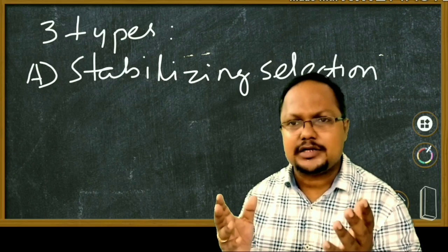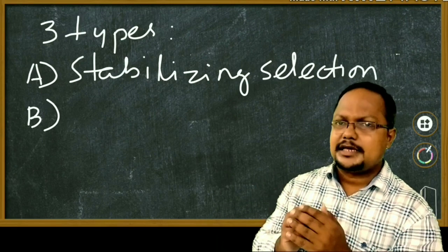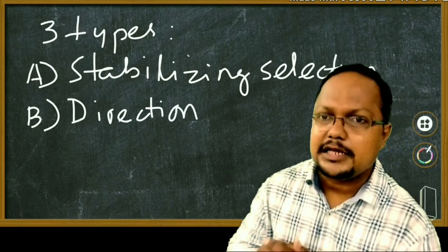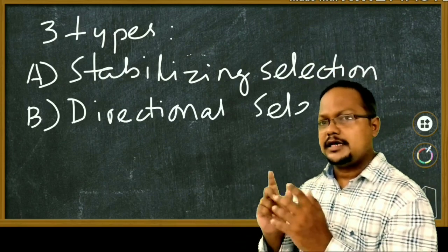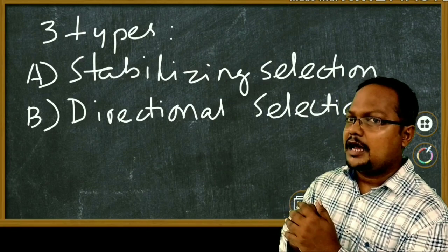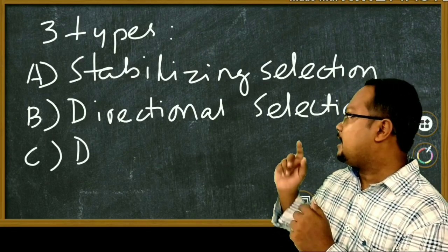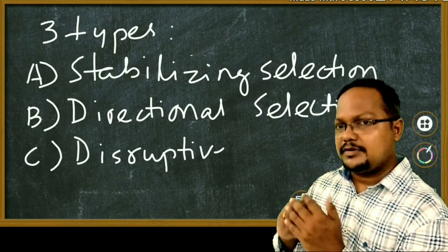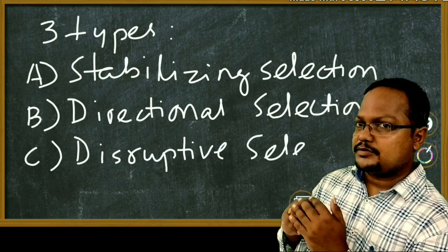This differential reproduction or natural selection is of three types: first stabilizing selection, second directional selection, and third disruptive selection. Now we will see about natural selection.